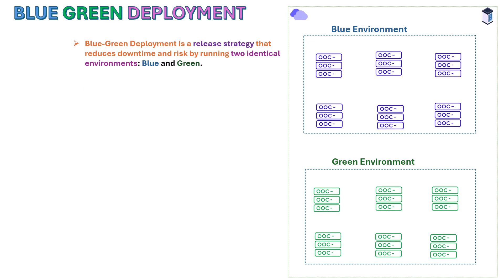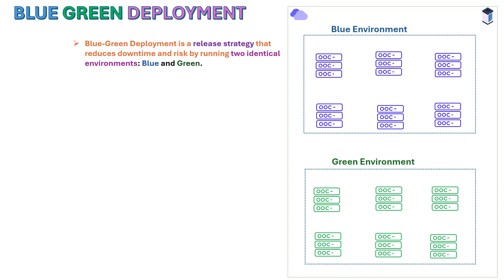Hi everyone, this is Mani, welcome back to SK SecOps channel. Today we are going to understand what is blue-green deployment. Blue-green deployment is a release strategy that reduces downtime and risk by running two identical environments: one is blue and the other is green. On the right you can see some set of servers for the blue environment.